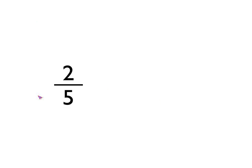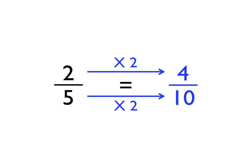To summarise how we find equivalent fractions: if I said to you, find an equivalent fraction to two-fifths, here's how you go about it. Think of a number — say two. It can be any whole number. Then times the top and the bottom numbers by two. So two times two is four, and five times two is ten. So two-fifths and four-tenths are equivalent fractions. Maybe you want to times by five instead — that's fine. Two times five is ten, and five times five is twenty-five. So two-fifths and ten-twenty-fifths are equivalent fractions.